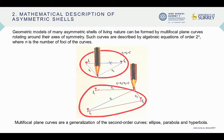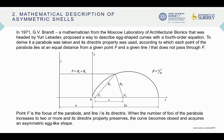Geometric models of many asymmetric shells of living nature can be formed by multifocal plane curves rotating around the axis of symmetry. Such curves are described by an algebraic equation of order 2 to the nth power, where n is the number of foci of the curves. To derive the equation, a parabola was taken.